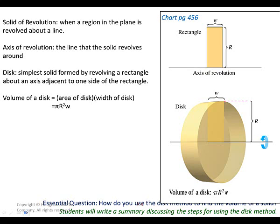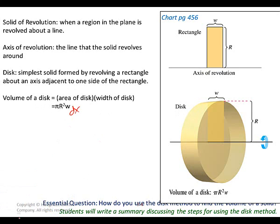A solid of revolution is when a region is revolved around an axis. We could also integrate horizontally. We take the equation and subtract the line, but it has to be solved. There's going to be an axis of revolution — today it's probably going to be your x-axis or y-axis. A disk is the simplest solid formed by revolving a rectangle about an axis adjacent to one side of the rectangle.